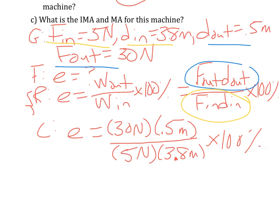Let's see, 30 times 0.5 is 15, so we got 15 newton meters on the top, and 5 times 3.8 is 19, 19 newton meters on the bottom times 100 percent.